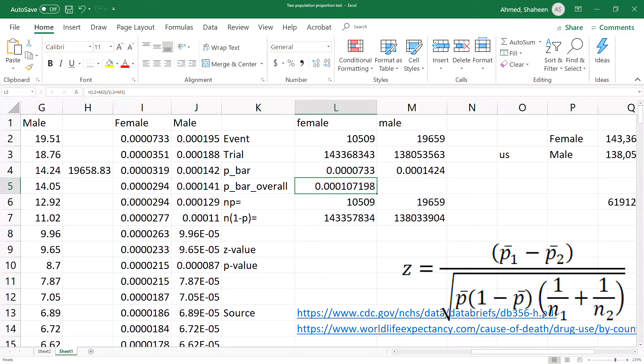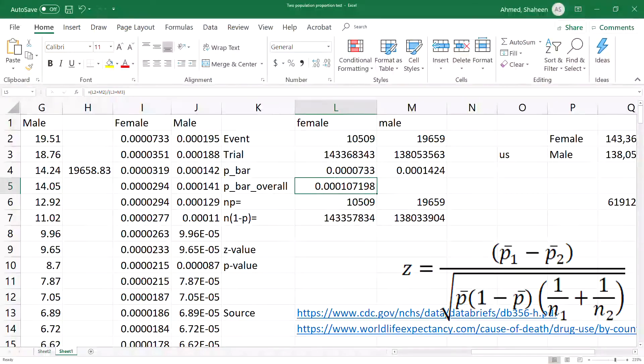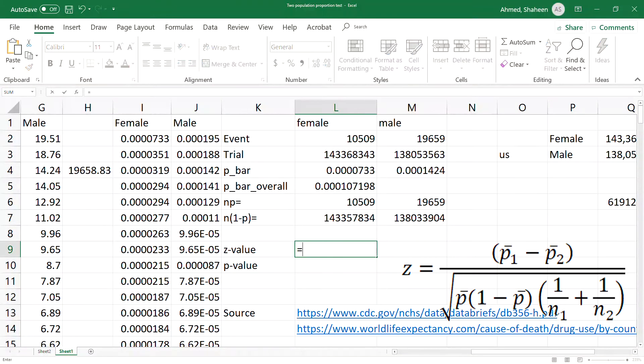The overall p-bar equals x1 plus x2 divided by the total population. Let me show you how to calculate the z-value. The z-value is simply equal to - and we'll start with the parentheses.